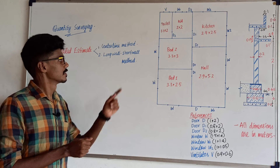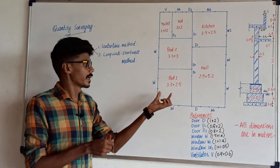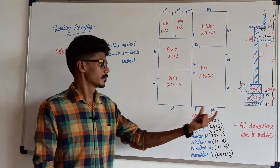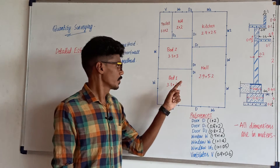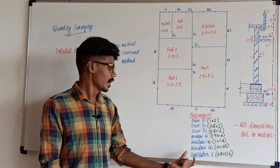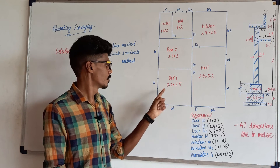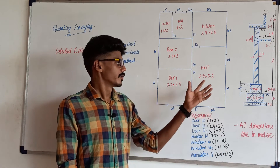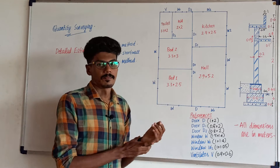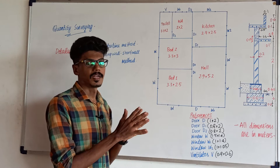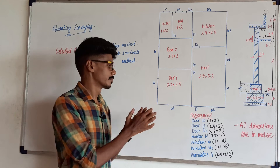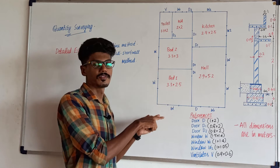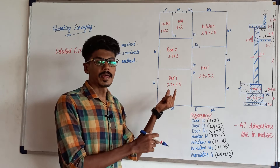In this video, if you are interested in the central line method, here we have a plan and a section — a plan for a 2BHK with doors, windows, ventilations, sizes and dimensions. The central line method is very simple. We use a double line sketch; this figure is a single line figure, so we have to convert it to a double line figure.